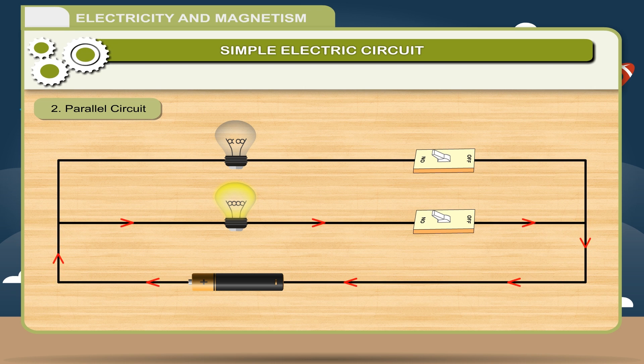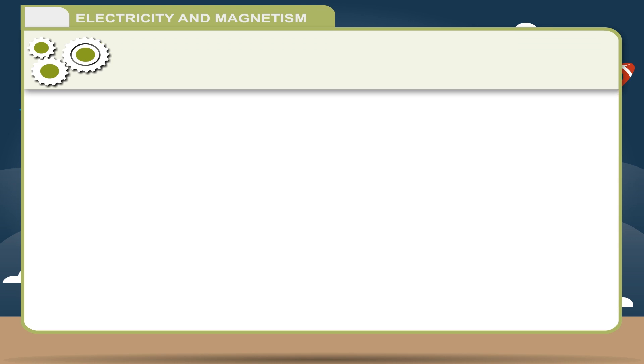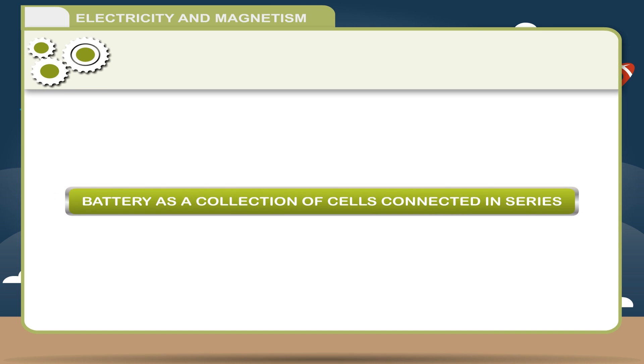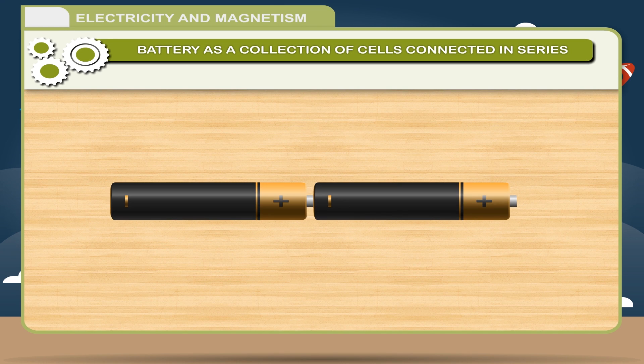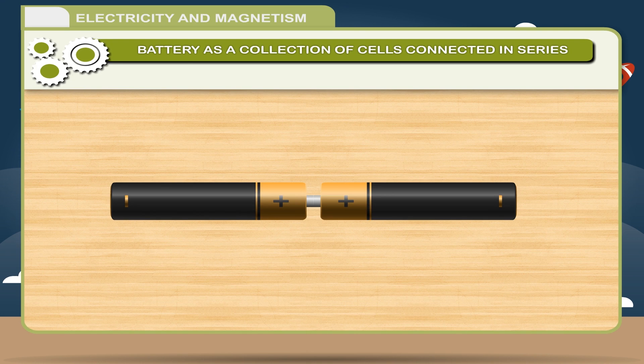Battery as a collection of cells connected in series. Battery is made up of two or more cells joined together. In a battery the positive terminal of one cell is connected to the negative terminal of the next cell.